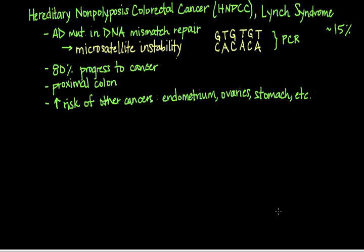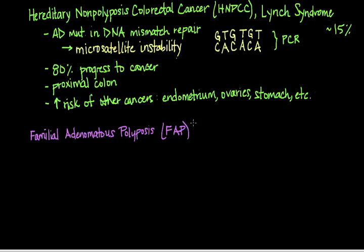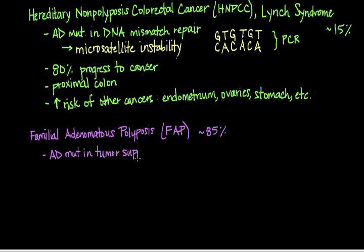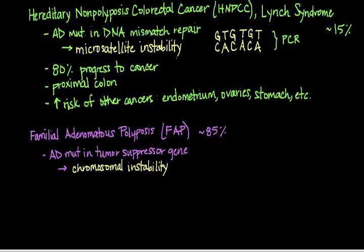The second possible molecular pathway leads to what is called familial adenomatous polyposis, or FAP, and this pathway is believed to be involved in about 85% of colorectal cancers. This mutation is also autosomal dominant, but the mutation is in a tumor suppressor gene rather than a DNA mismatch repair gene, leading to chromosomal instability. The tumor suppressor gene involved is called the APC gene, or adenomatous polyposis coli gene, located on chromosome 5q.